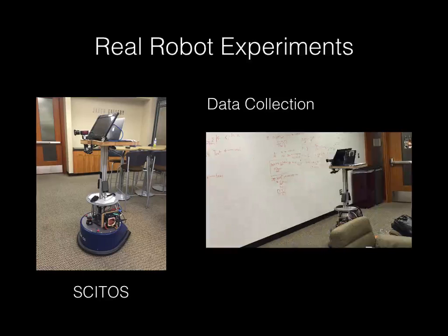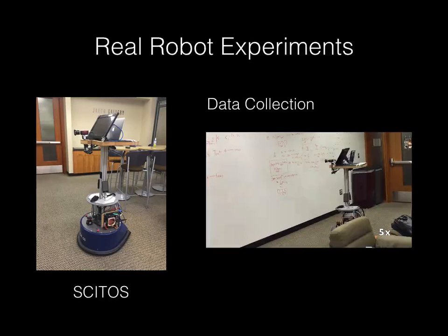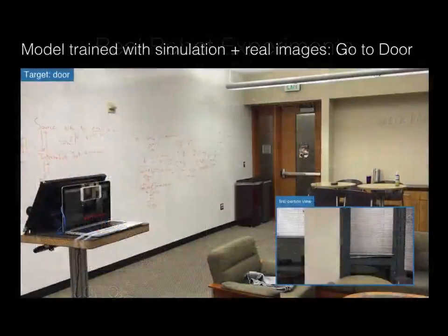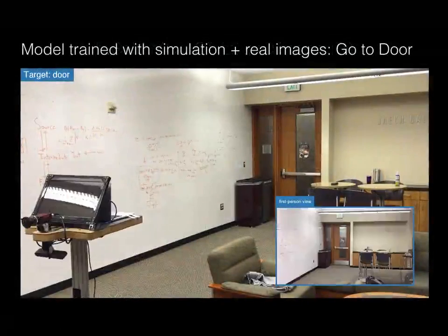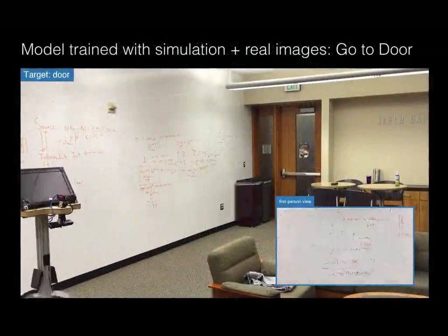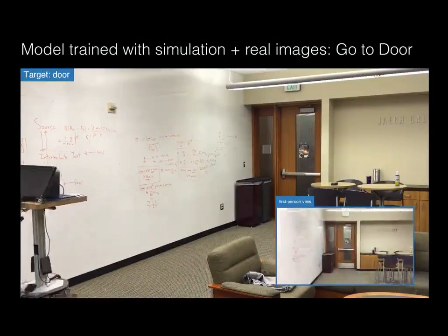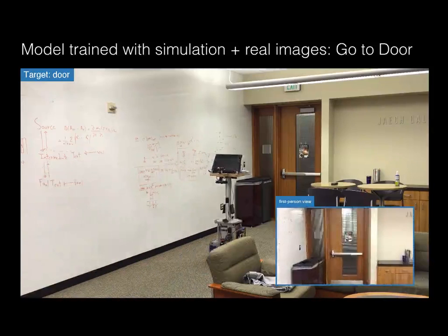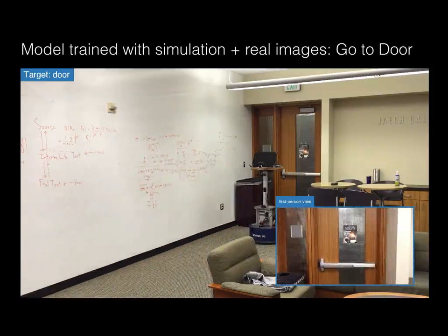We move the robot in the scene and collect images for fine-tuning the model. We specify the door as the target, and the robot learns to navigate to the door on the right side. You can see a view of the robot during navigation.